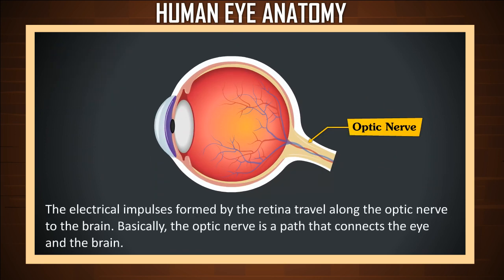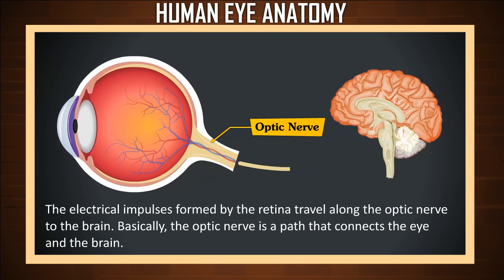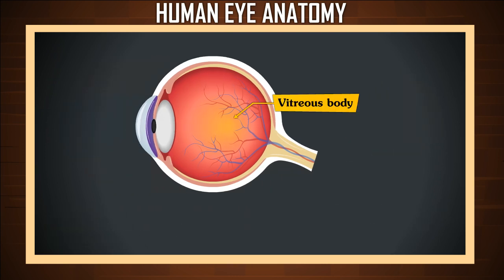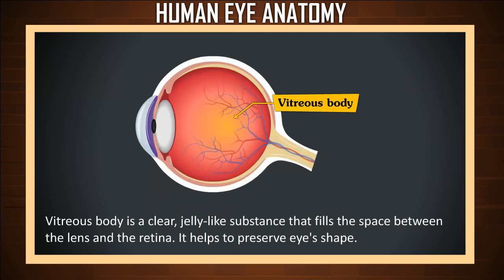Optic nerve. The electrical impulses formed by the retina travel along the optic nerve to the brain. Basically, the optic nerve is a path that connects the eye and the brain. Vitreous body. The vitreous body is a clear, jelly-like substance that fills the space between the lens and the retina. It helps to preserve the eye's shape.